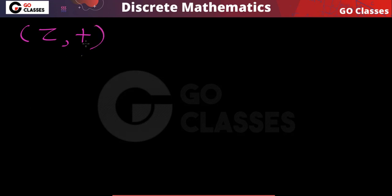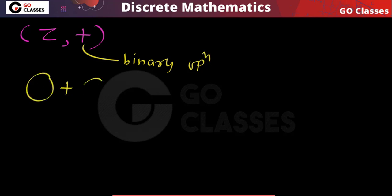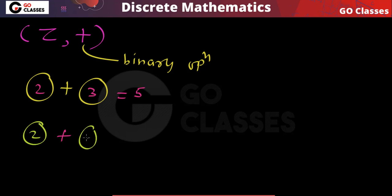For example, consider the structure of integers with addition. This addition is a binary operation because it takes two values — they can be same or different — and the result will again be an integer. So addition on the integers is a binary operation and this is an algebraic structure.